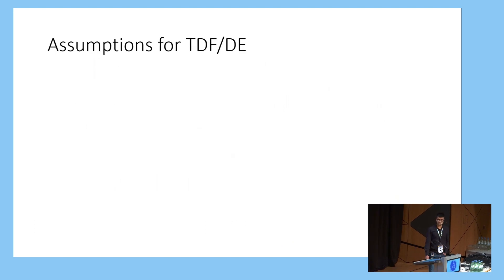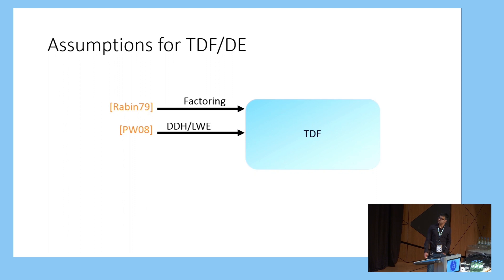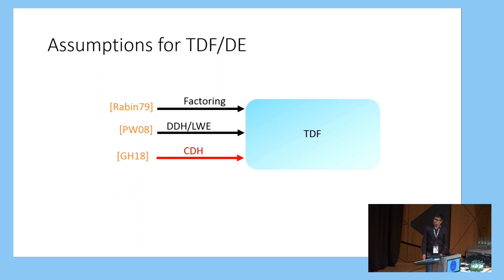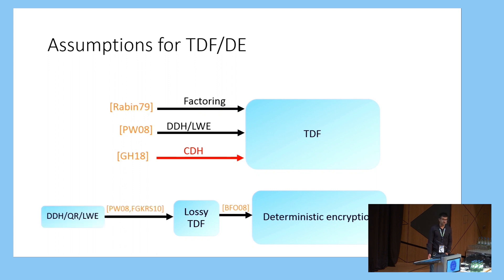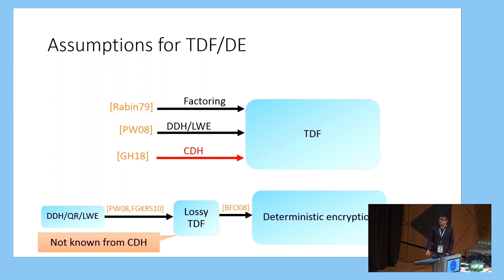Let's look at the set of specific assumptions from which we can build these notions. Up until recently, we knew how to build trapdoor functions only from a very narrow set of assumptions, which included factoring, DDH, and LWE. In joint work with Sanjam Garg from last year, we showed how to build trapdoor functions from the computational Diffie-Hellman assumption. For deterministic encryption, the only previous construction is based on lossy trapdoor functions, which in turn we know how to build only from decisional assumptions. In particular, it is not clear how to build lossy trapdoor functions from the computational Diffie-Hellman assumption.